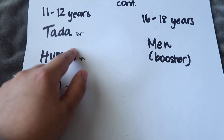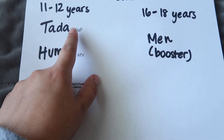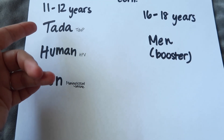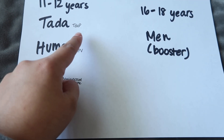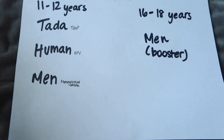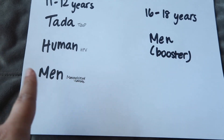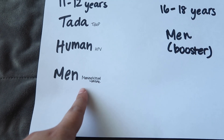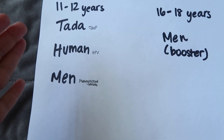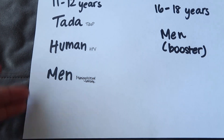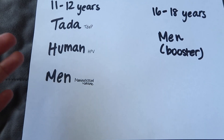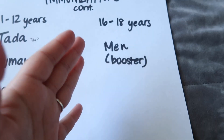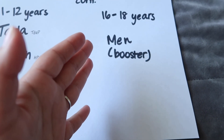The reasoning is that the letters in uppercase indicate what the vaccine mainly contains. For Tdap, it's mainly tetanus and pertussis, whereas for DTaP, it was mainly diphtheria. 'Human' stands for HPV and 'men' is the Meningococcal vaccine. So the mnemonic is 'ta-da, human men' — it's kind of a weird mnemonic, but it works. At 16 to 18 years, you only have one vaccine, which is the Meningococcal vaccine.